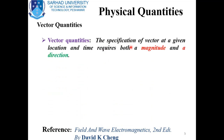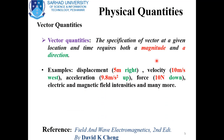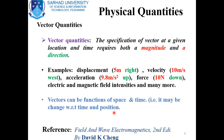For example, temperature is a scalar quantity, and near a heating source the temperature is greater than the temperature far away from the source, so in this case the temperature depends upon position. Vector quantities: the specification of a vector at a given location and time requires both a magnitude and a direction. Those physical quantities which are completely described by magnitude as well as direction are known as vector physical quantities. Examples are displacement, velocity, acceleration, force, electric and magnetic field intensity, and many more. Vectors may or may not be space and time dependent.